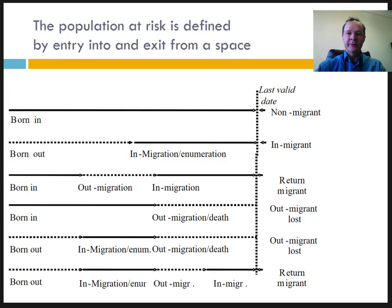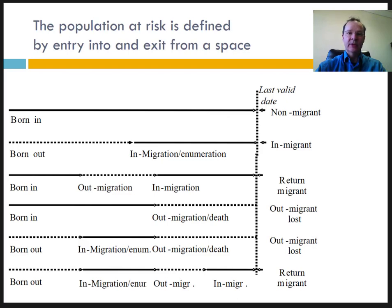Remember a previous screencast where we introduced lifelines. They represent the different ways to enter or exit the population at risk. The obvious ways are through birth and death, as well as by enumeration at the start of the follow-up study and by right censoring at the end of the follow-up study. We have also seen that the population at risk is closely linked to the issue of migration.